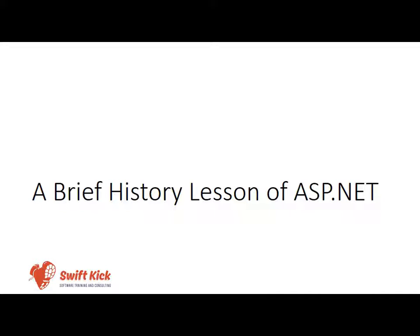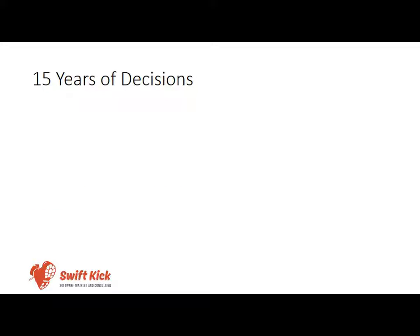One thing I would like to do before diving into the technical aspects of ASP.NET Core is take a walk down memory lane — how did we get to where we are now from the very beginning? Here is a very brief history of ASP.NET. We have about 15 years of decisions made from the initial release of ASP.NET to the release of ASP.NET Core. If we go back to 2002, this is the initial release of ASP.NET 1.0, which is also very close to the initial release of the .NET Framework.